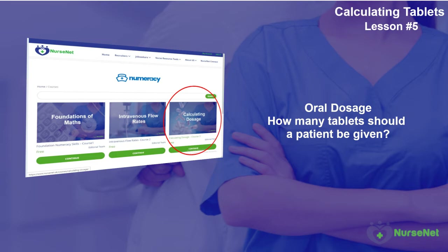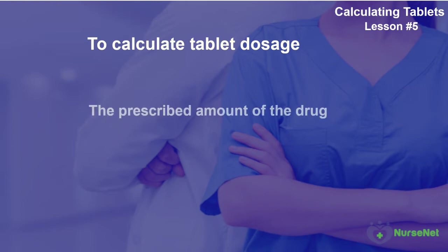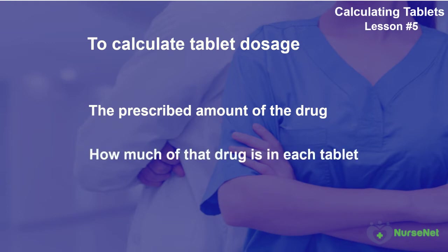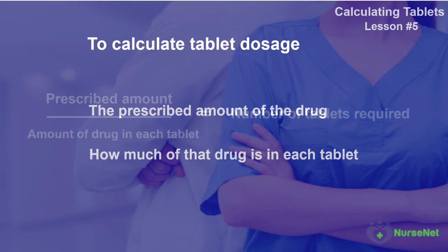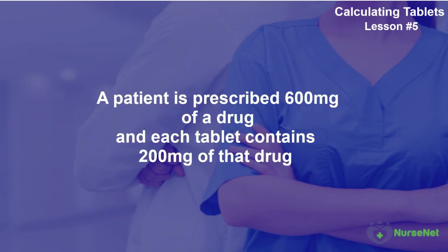The two elements of information that we will need are: number one, the prescribed amount of the drug, and number two, how much of that drug is in one tablet or capsule. To work out how many tablets to give to a patient, we must divide the prescribed amount of the drug by the amount of the drug in each tablet.